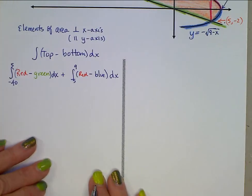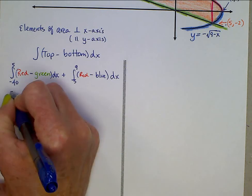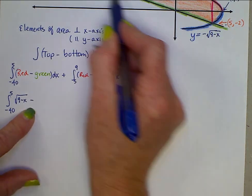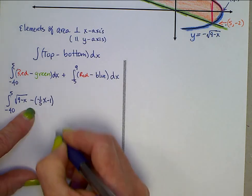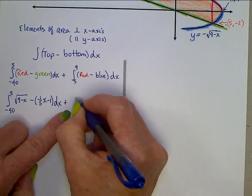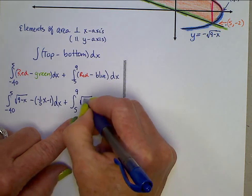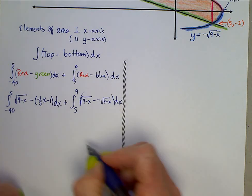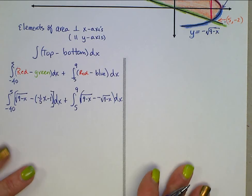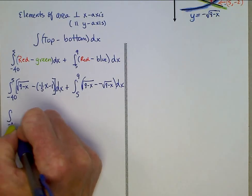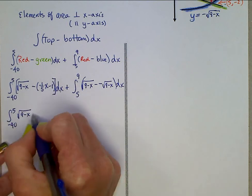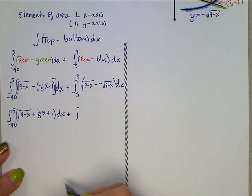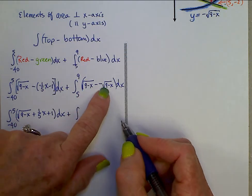Alright, now let's go back in and actually write in those functions. So we have negative 40 up to 5, the red function was the square root of 9 minus x minus the green is that line, so negative one-fifth x minus 1 dx plus this integral, 5 to 9, red, positive square root of 9 minus x minus the blue, which is negative square root of 9 minus x dx. Cleaning up a bit, square root of 9 minus x minus the negative square root of 9 minus x, that's two of those.